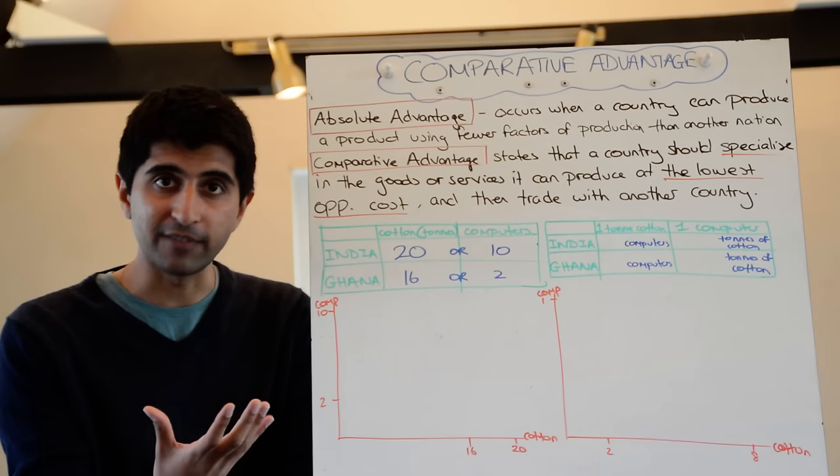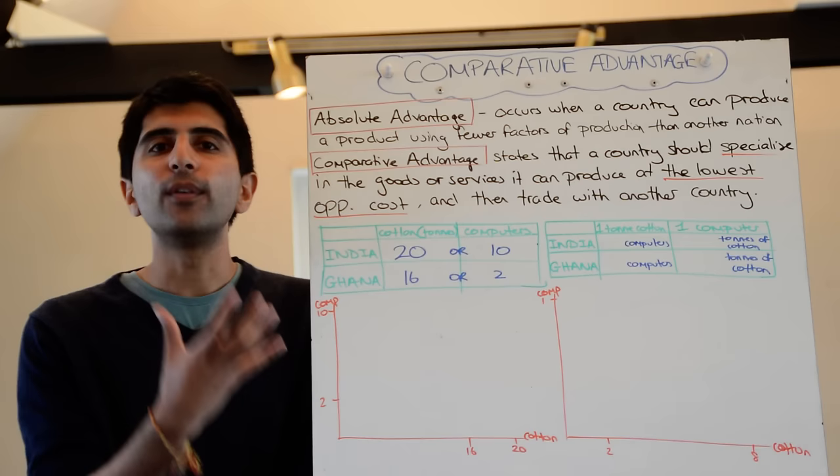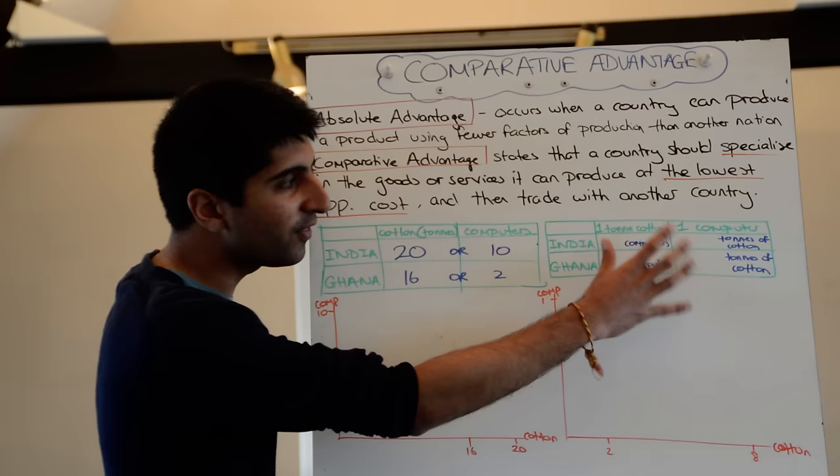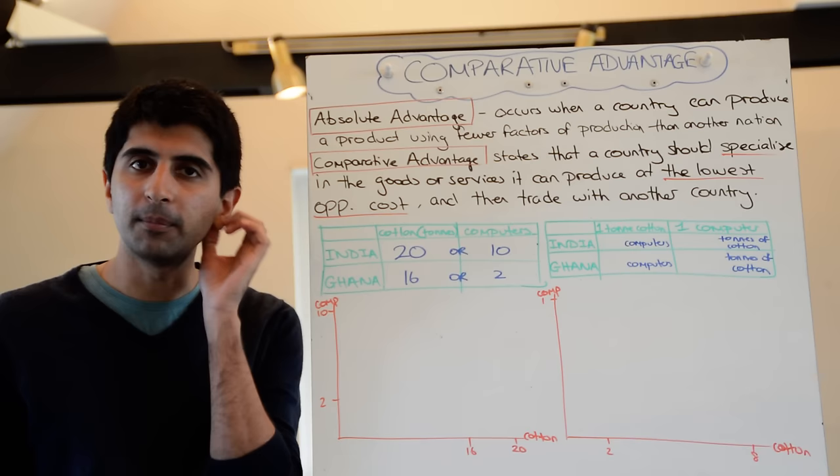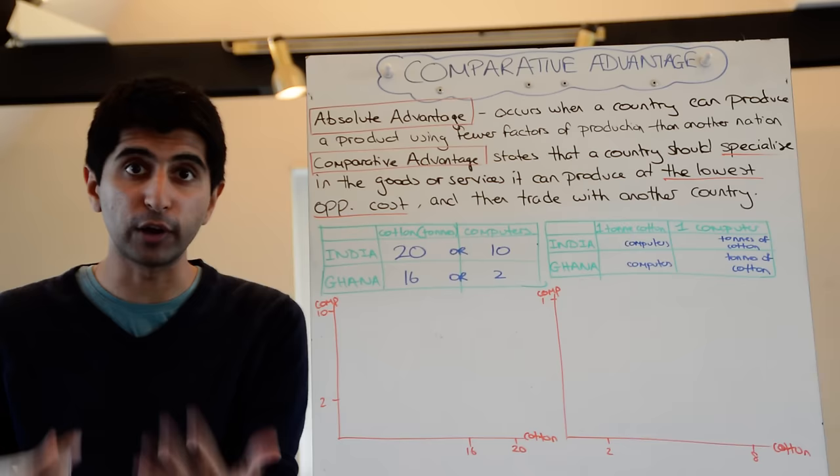But we know that the law of comparative advantage underpins everything — that's more important. So let's move to this table and see for each tonne of cotton made, for each computer made, how much is each nation giving up to produce it? Because that's what comparative advantage says we need to look out for: the opportunity cost of production.